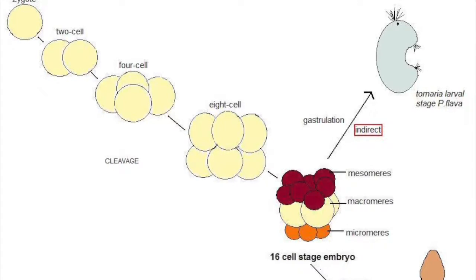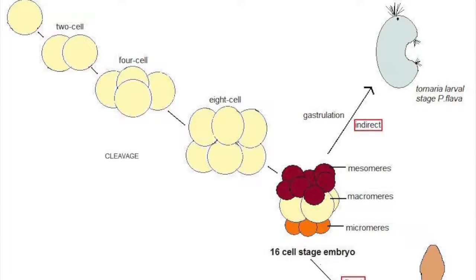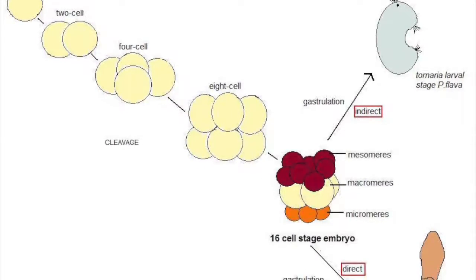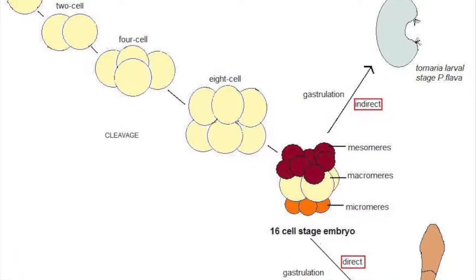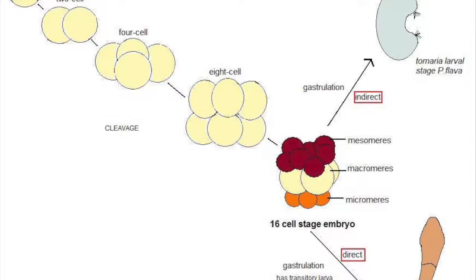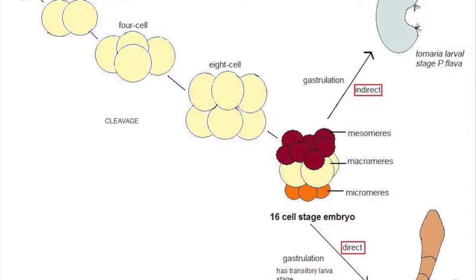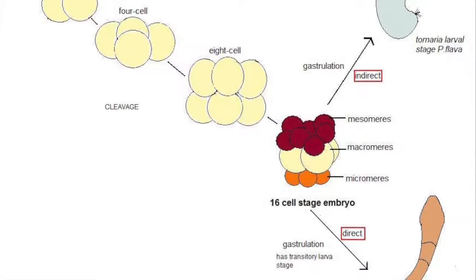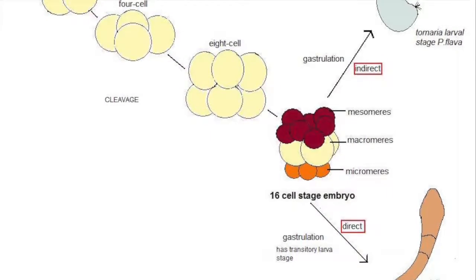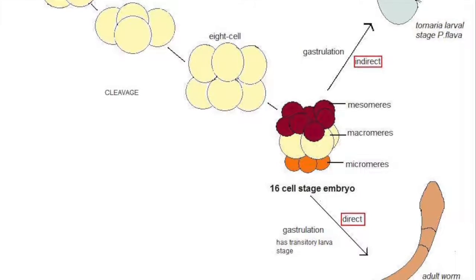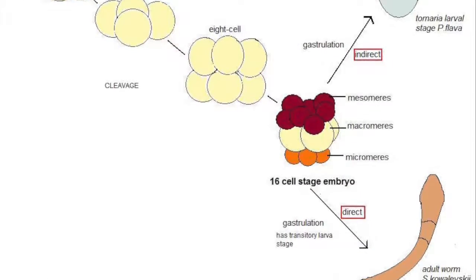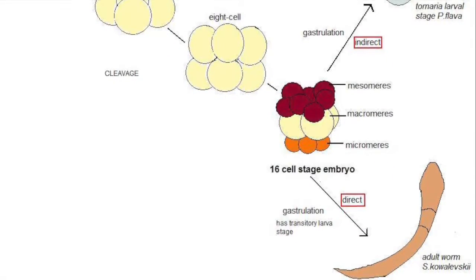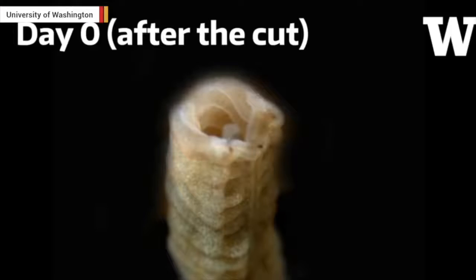Hemichordata are known to develop in two ways: either directly or indirectly. Indirect development includes a larval stage that feeds on plankton before turning into an adult worm. Direct development bypasses this larval stage and develops straight into an adult worm.